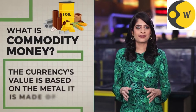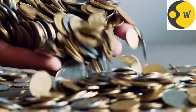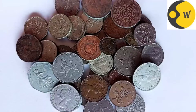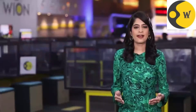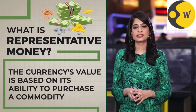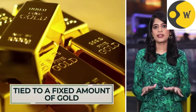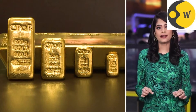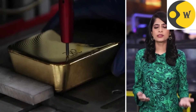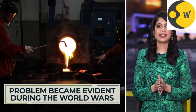Then currency came around. People started using commodity money whose value varied depending on the metal it was made of. Gold coins were most valuable, silver less valuable, bronze lesser still. Then came representative money, whose value was decided based on its ability to purchase a certain physical commodity, like gold. Each country's currency was tied to a fixed amount of gold. But the gold standard had its drawbacks — like you could not have new supply of money without new supply of gold. This problem became evident during the world wars.